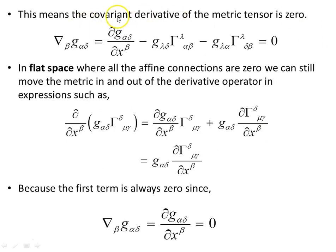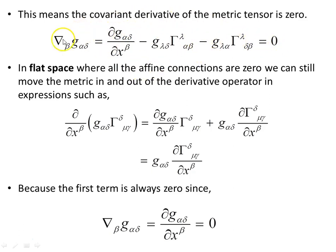This means that the covariant derivative of the metric tensor is zero — this is metric compatibility. The covariant derivative of the metric tensor, represented by the full expression seen previously, is zero at all points on the manifold.